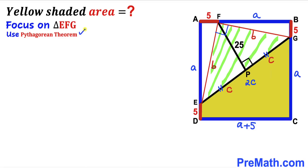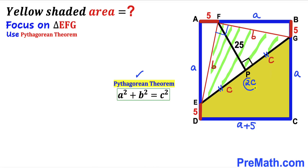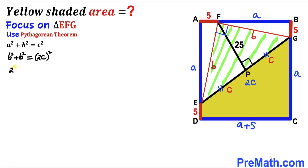Now we apply the Pythagorean theorem on triangle EFG. The hypotenuse is 2c and the two other side lengths are b and b. So we get: b² + b² = (2c)², which simplifies to 2b² = 4c². Dividing both sides by 4 to isolate c², we get c² = b²/2. Let me label this as equation number one.